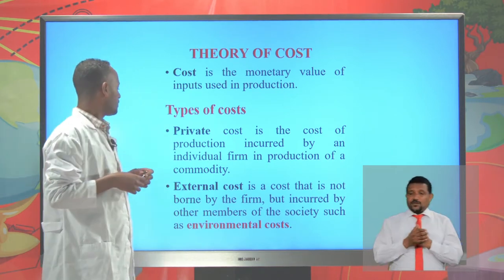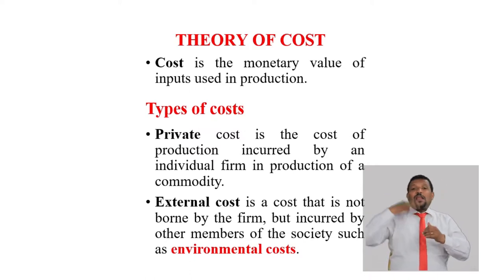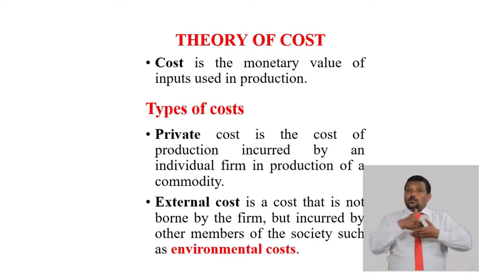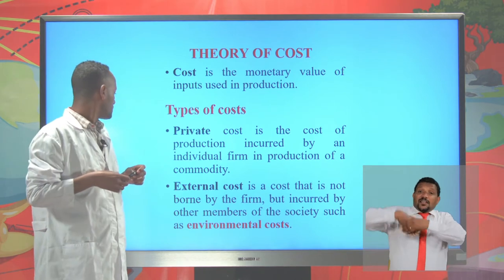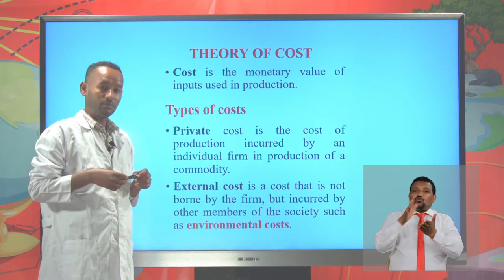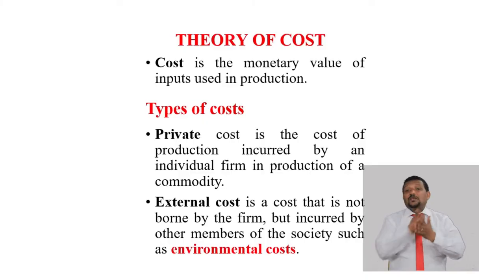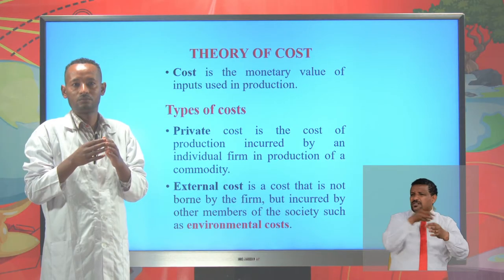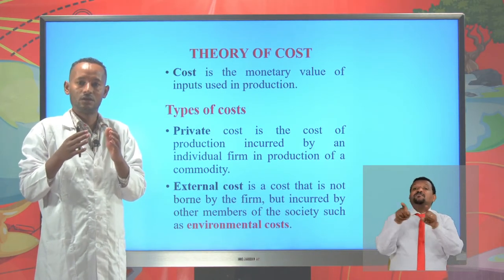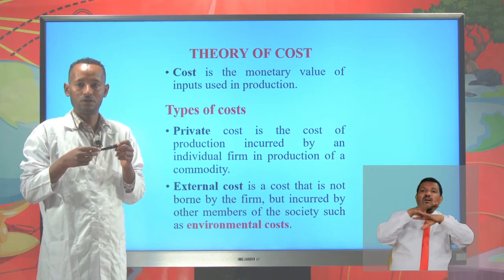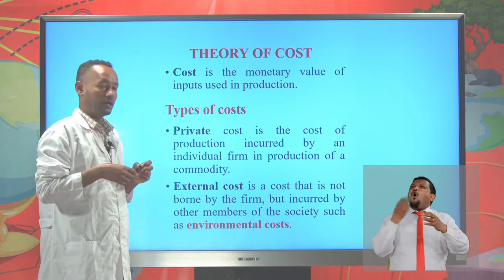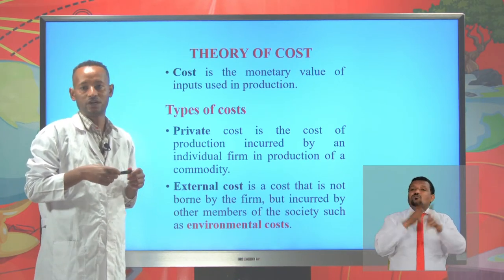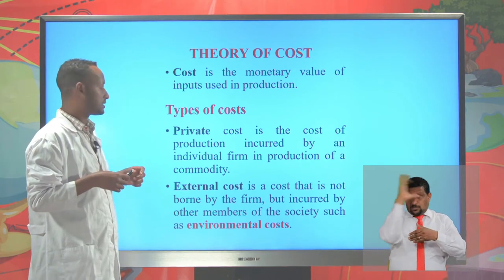Now let's see the types of cost. The private cost is the cost of producing a good, and it is mainly incurred by a private firm. But the external cost is a cost that is not borne by the firm, but is incurred by other members of the society. When there is production, there are environmental problems such as land pollution, soil pollution, noise pollution, and the likes. These costs are incurred by members of the society and are considered as external costs.